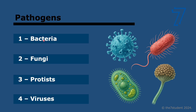You've probably heard of bacteria — prokaryotes. Fungi are eukaryotes; for example, athlete's foot is a type of fungal pathogen. A type of protist is malaria, and a type of virus is, for example, COVID. Remember, viruses are not living.